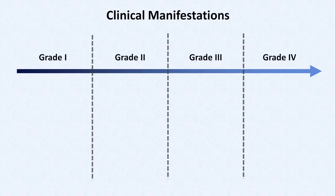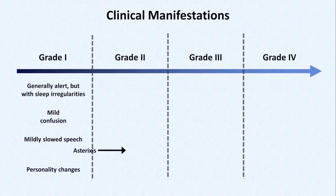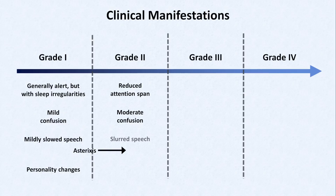The overall severity of manifestations in these four domains is often graded on a four-point scale. In grade one hepatic encephalopathy, patients are generally alert but have sleep irregularities such as sleep reversal, in which they are prone to nighttime insomnia and daytime sleepiness. They have mild confusion which may go unnoticed unless specifically tested, speech may be mildly slowed, and those nearing grade two will start displaying asterixis. In grade two, attention span becomes reduced, which can be picked up with tasks such as calculating serial sevens or the animal fluency test. Patients will have moderate confusion apparent within a few minutes of conversation, speech will be slurred, and they may exhibit some ataxia. As they approach grade three, walking without assistance may no longer be safe. These patients may also exhibit disinhibition by saying or doing things that are socially inappropriate and out of character for them.